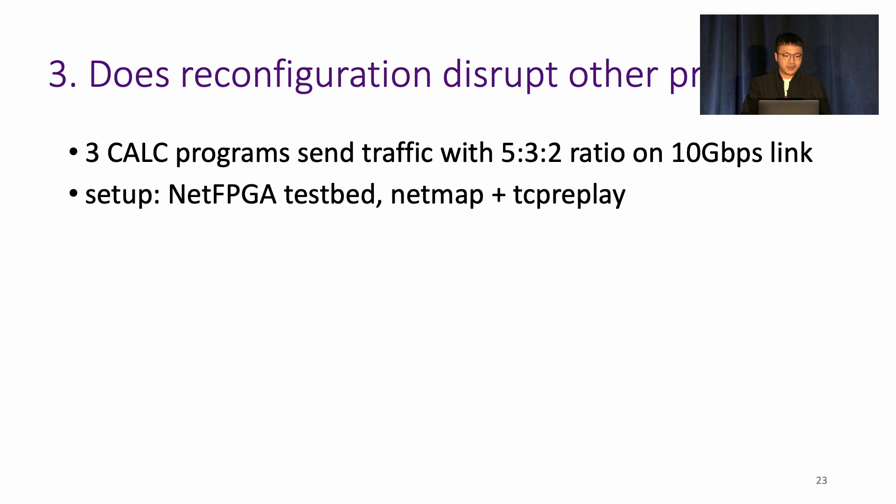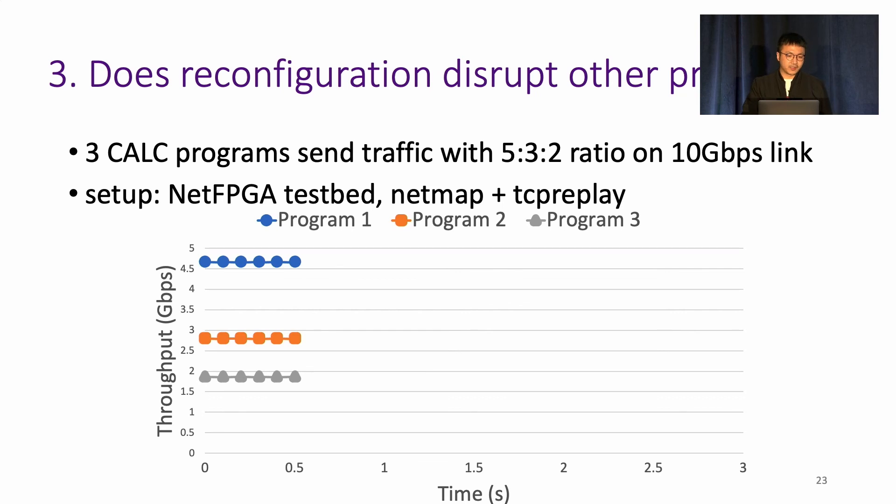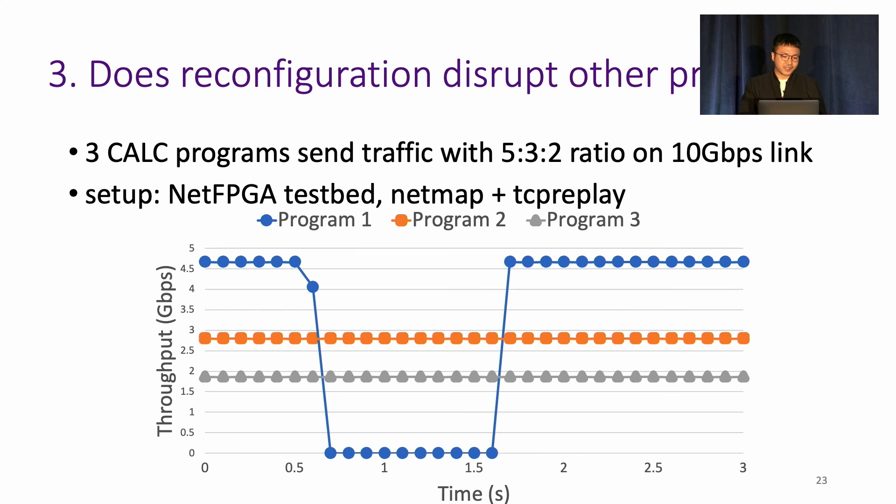To show Menshen's disruption-free capability, we have three Calc programs constantly sending out traffic at line rate on a 10 Gbps link. As you can see, at 0.5 seconds, program 1 starts to reconfigure and its throughput drops to 0 quickly. And during the reconfiguration of program 1, the throughputs of program 2 and program 3 are not affected. After one second's reconfiguration, program 1 throughput recovers, and throughout the whole process, the throughputs of other two programs are not affected at all. What's to mention is that the reconfiguration time of program 1 is inflated to one second for better visualization. Typically, Menshen's reconfiguration time is comparable to commercial products.